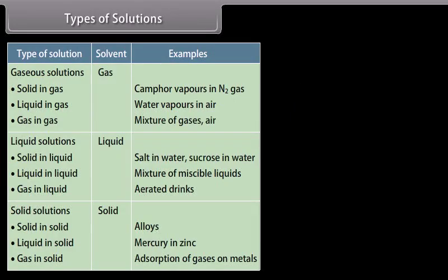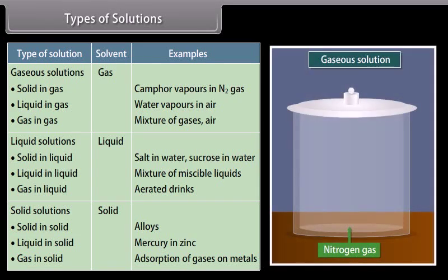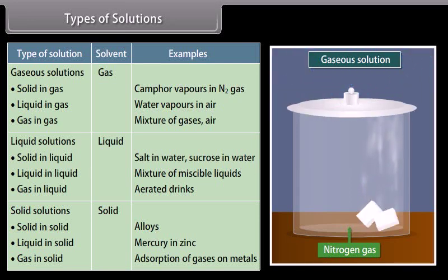Types of solutions: In a binary solution, components can be either solid, liquid, or gas. There are three types of solutions: gaseous solutions, liquid solutions, and solid solutions. In gaseous solutions, gas is the solvent. They are categorized as: solid in gas (e.g., camphor vapor in nitrogen gas), liquid in gas (e.g., water vapors in air), and gas in gas (e.g., mixture of gases or air).